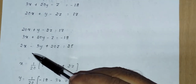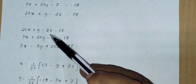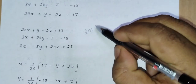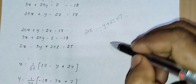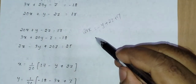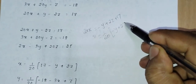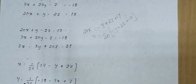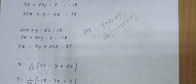That completes the first step — rearranging the equations. Now from the first equation, rearrange to find x: 20x = 17 - y + 2z, so x = (1/20)(17 - y + 2z). In the same manner we can find y from the second equation and z from the third equation.